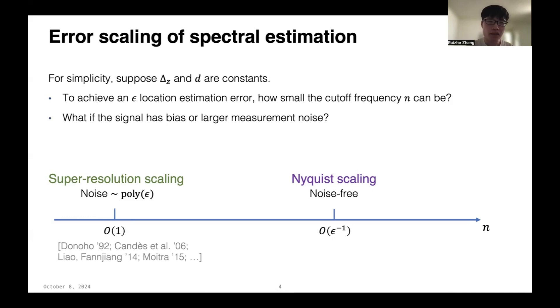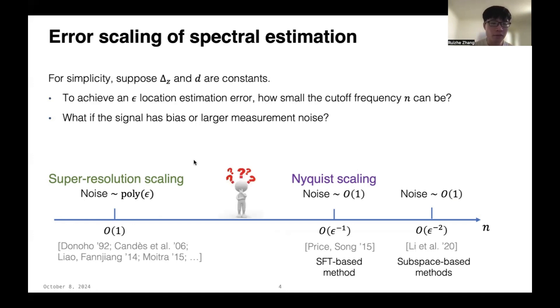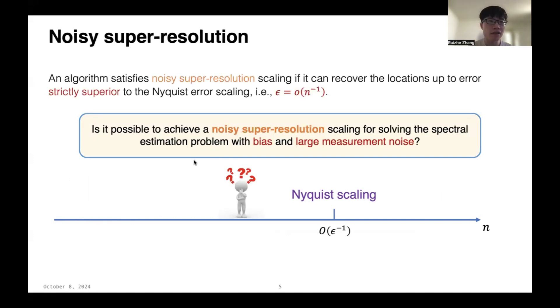So, what if the signal has bias or larger measurement noise? This regime has also been studied. However, all previous results can only at most achieve the same scaling as the Nyquist scaling, like n equals to 1 over ε. And it remains open whether we can still beat the Nyquist scaling in this region, like the super-resolution results. This motivates us to define so-called the noisy super-resolution, which means an algorithm can recover the locations up to an error strictly superior to the Nyquist error scaling, that is, ε to be little o of 1 over n.